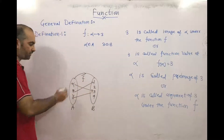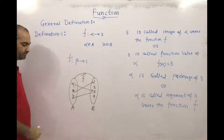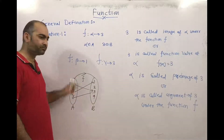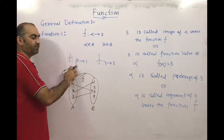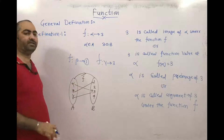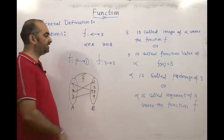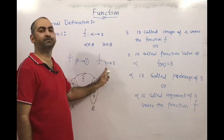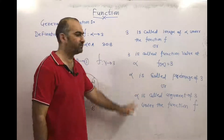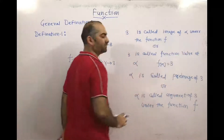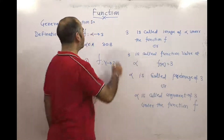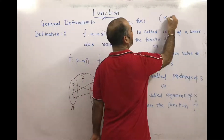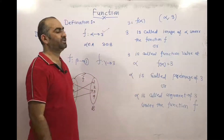Similarly, beta is connected with 1, so F(beta) = 1. And gamma is connected with 3, so F(gamma) = 3. Beta is the preimage of 1, or the argument of 1; and 1 is the image of beta, or the function value at point beta. Gamma is the preimage of 3, or the argument of 3; and 3 is the image of gamma, or the function value at point gamma. So we can also write alpha → 3 as (alpha, 3), or as 3 = F(alpha).